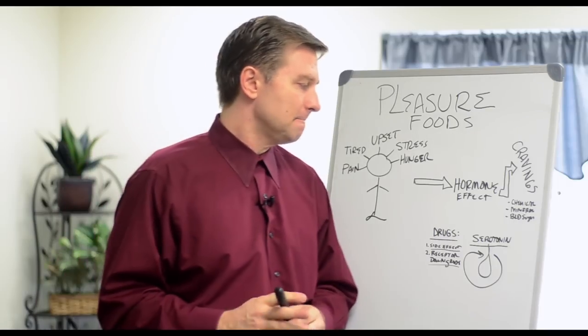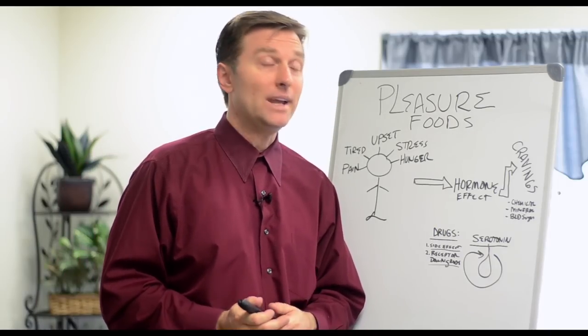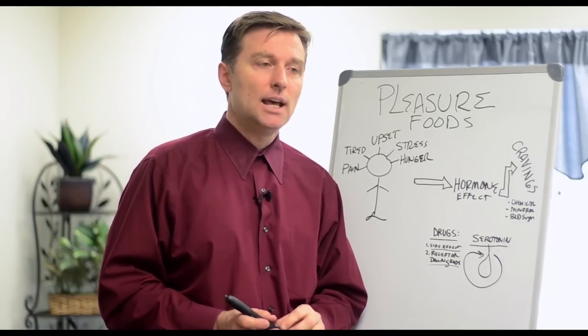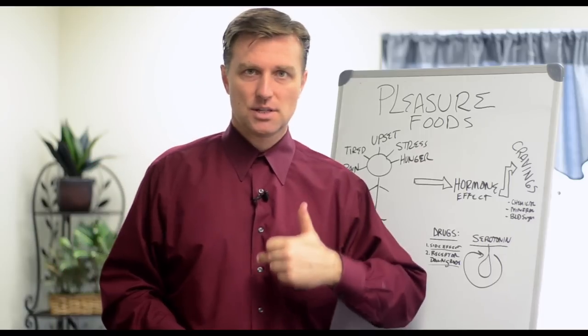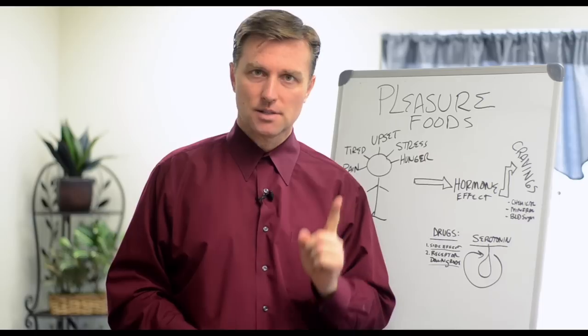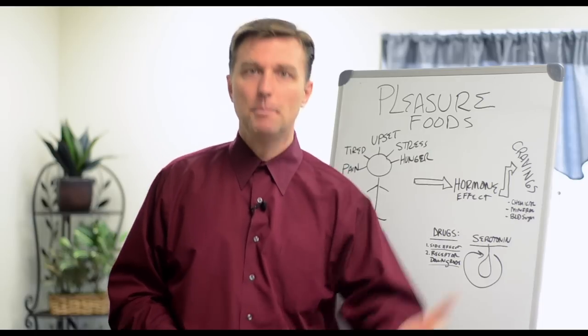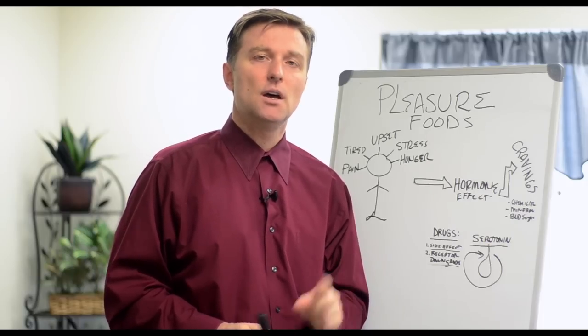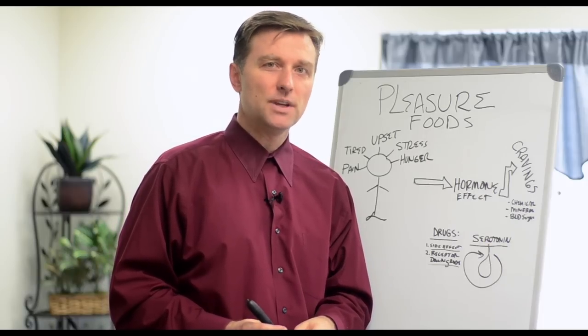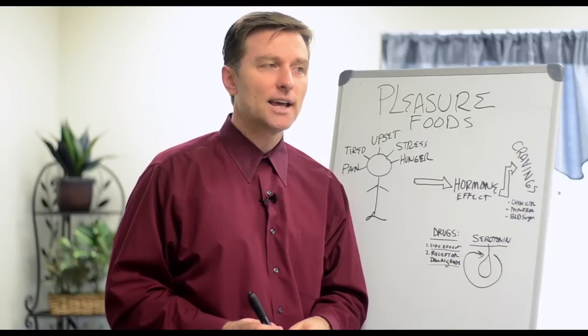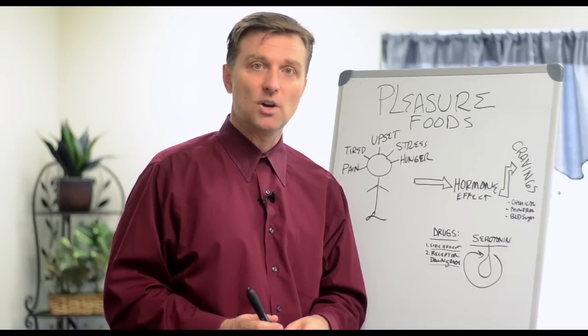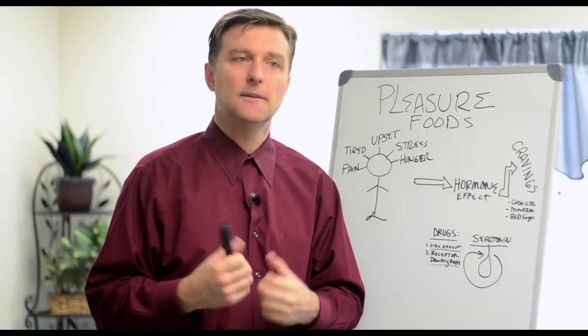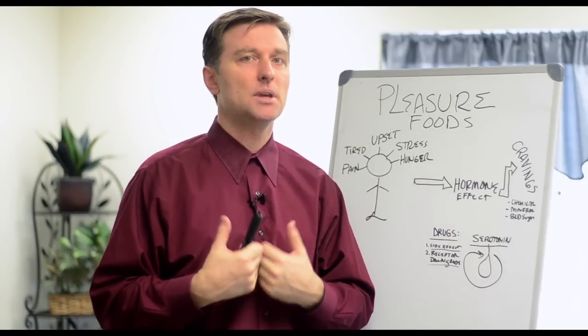The reason why wheat is bad for you is because not only does it turn into sugar, but that gluten breaks down into your stomach into a small protein that can cross the blood-brain barrier. It goes up into the brain and starts to affect your chemistry because it goes in the receptors, the opiate receptors, the morphine receptors in your brain. Wheat is acting like a drug in your brain. That's why there's so much pleasure in wheat and bread. This is why people are addicted to it.